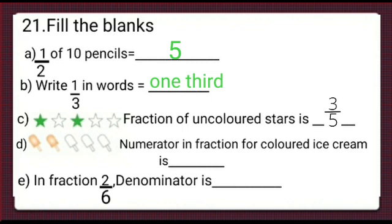Now, we will do part d. Numerator in fraction for colored ice creams is dash. We know numerator is a number written upwards in a fraction, that is a number of special parts. So, special colored ice cream parts are 2. Numerator here is 2. We will write here 2.